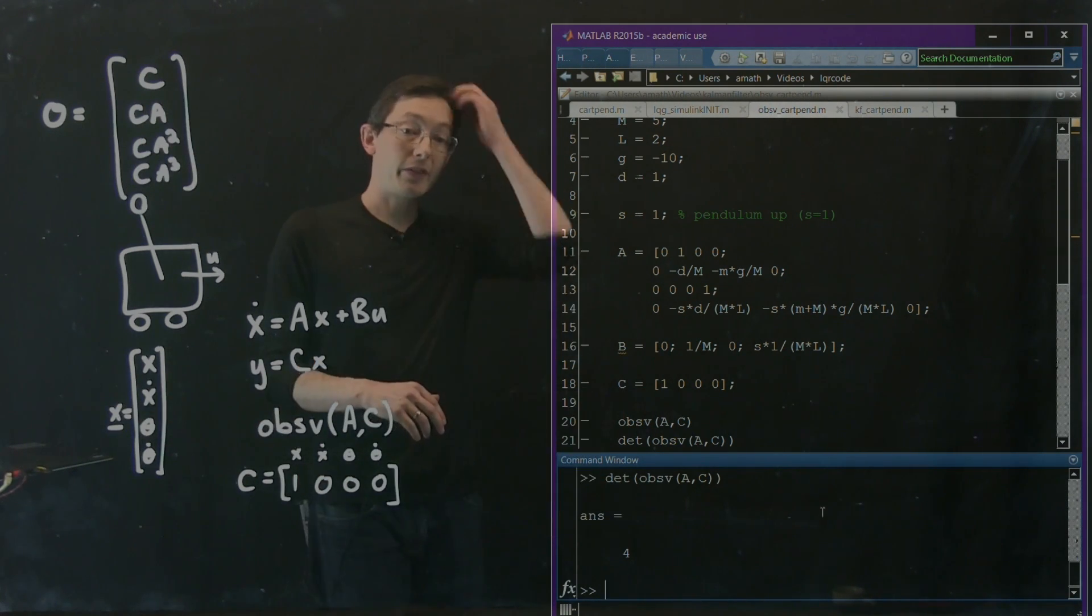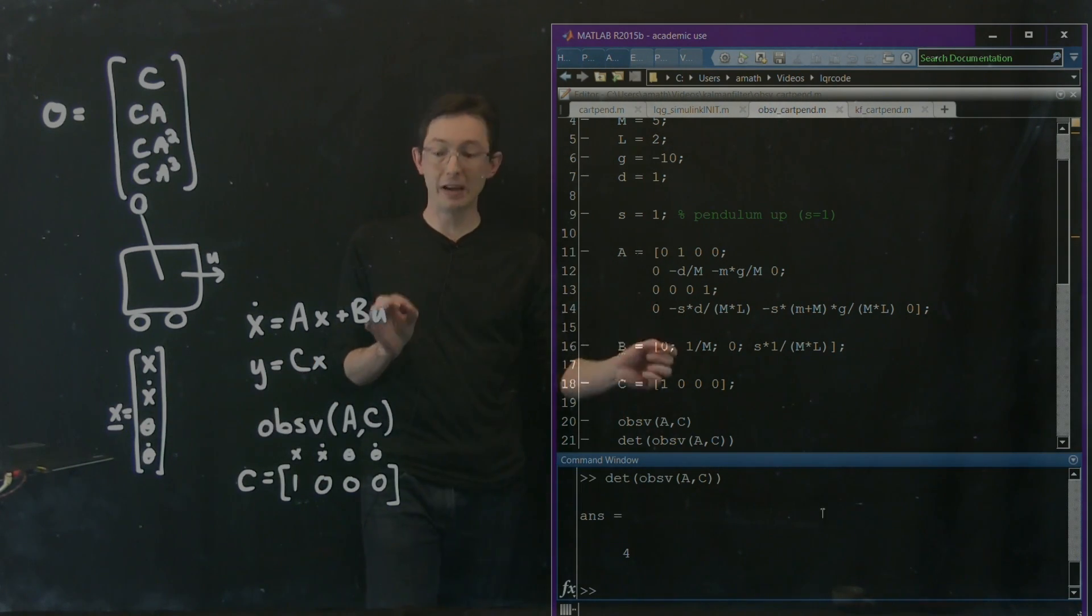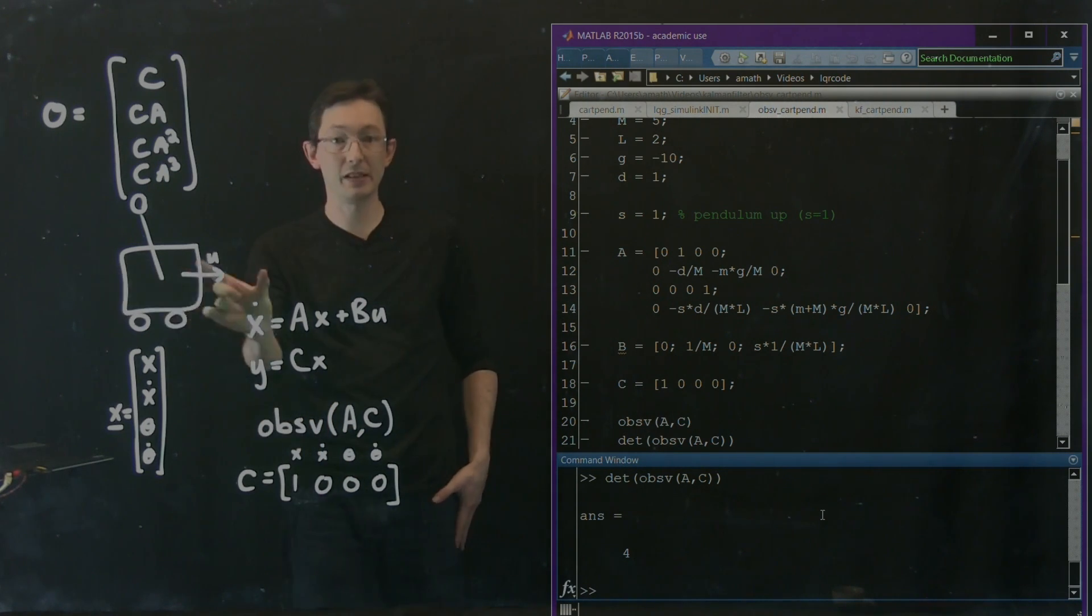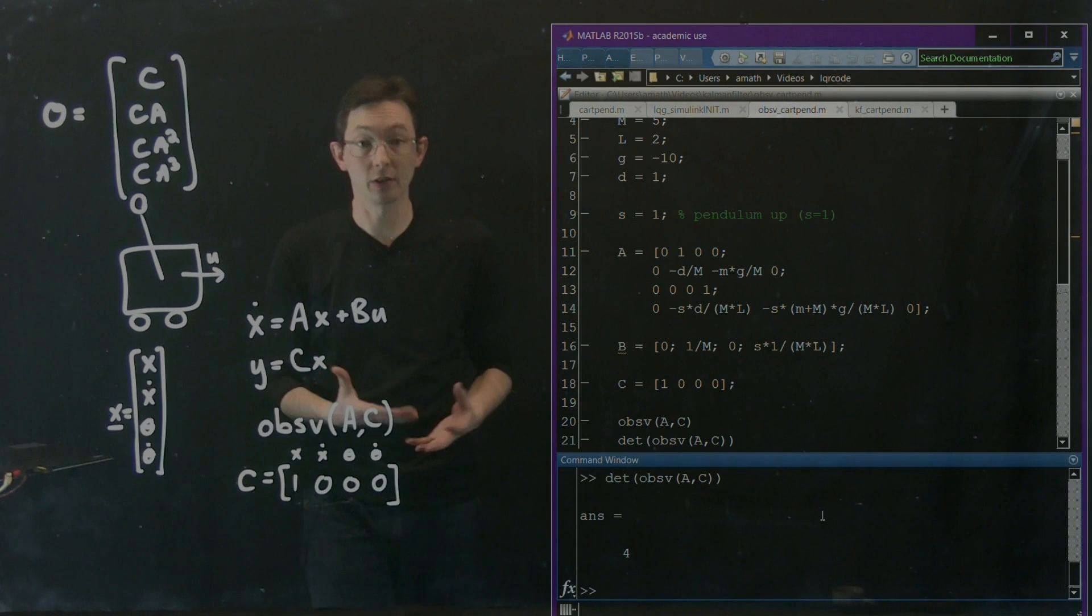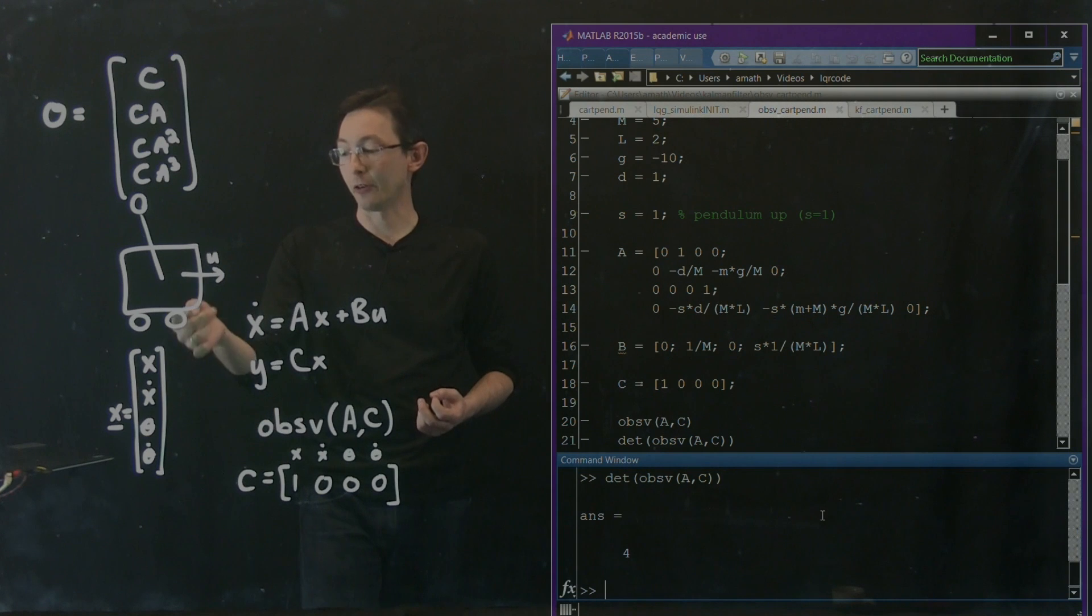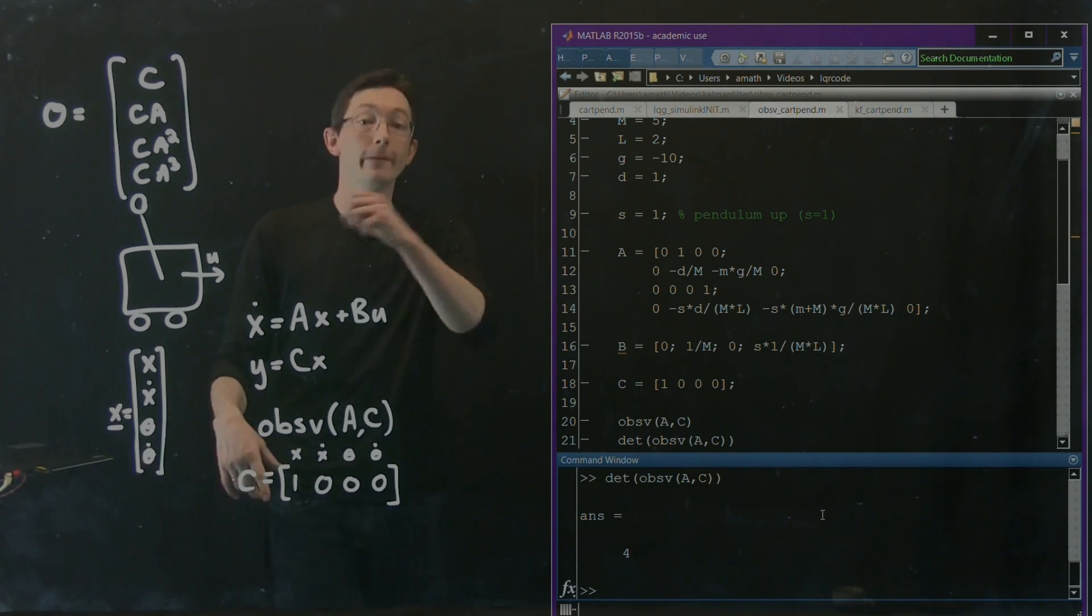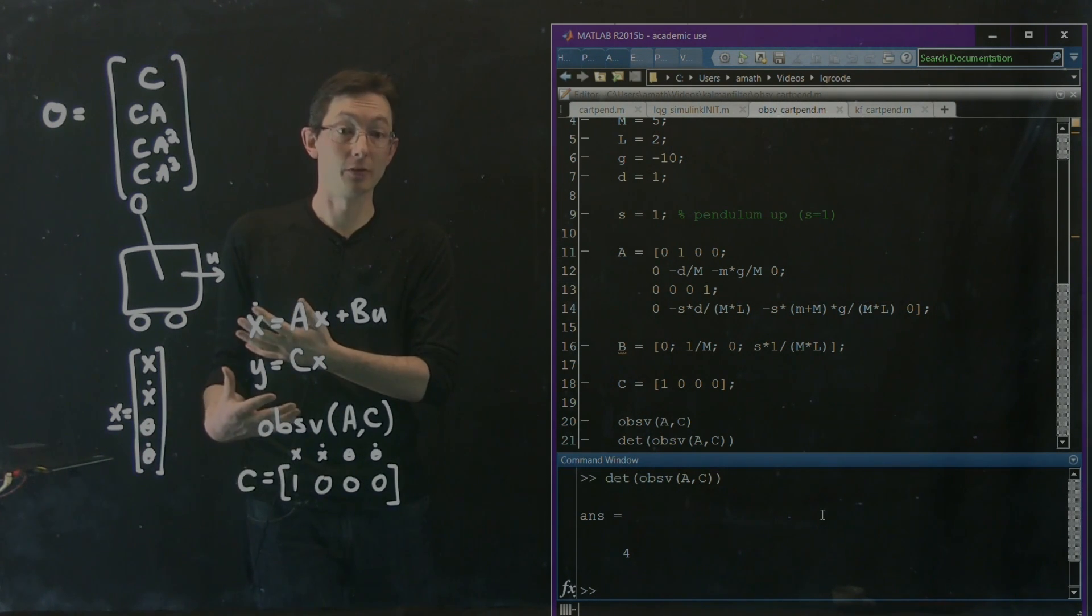And so what this tells us right off the bat is that this measurement, if I just measure the cart's position X, then that linear system is observable, which means that I can use that single measurement to back out all of the other state variables in time. And then I could use that estimated state for full state feedback control.